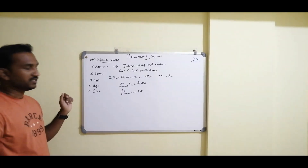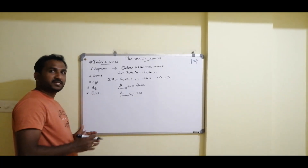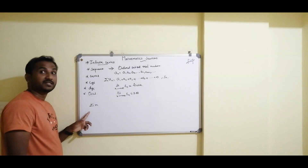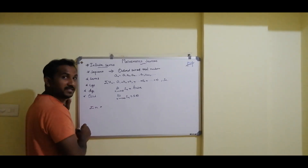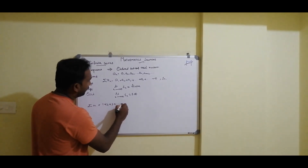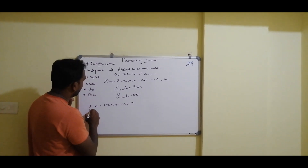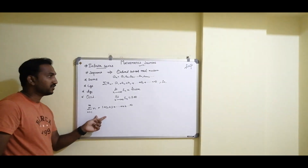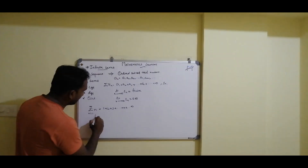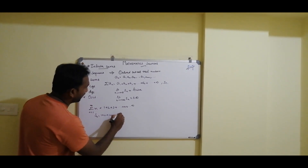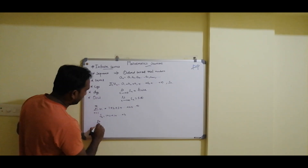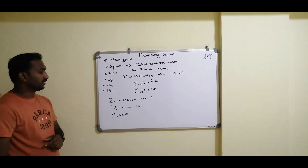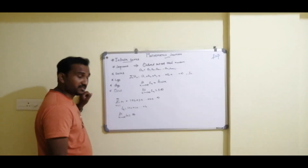Now we'll solve some basic problems based on infinite series. First, take Σn. We need to find whether it is convergent or divergent. This can be expressed as 1 + 2 + 3 + ... up to infinity. Considering only n terms, Sn = 1 + 2 + 3 + ... + n. Taking the limit as n→∞, we get infinity. Therefore, this series is obviously divergent.